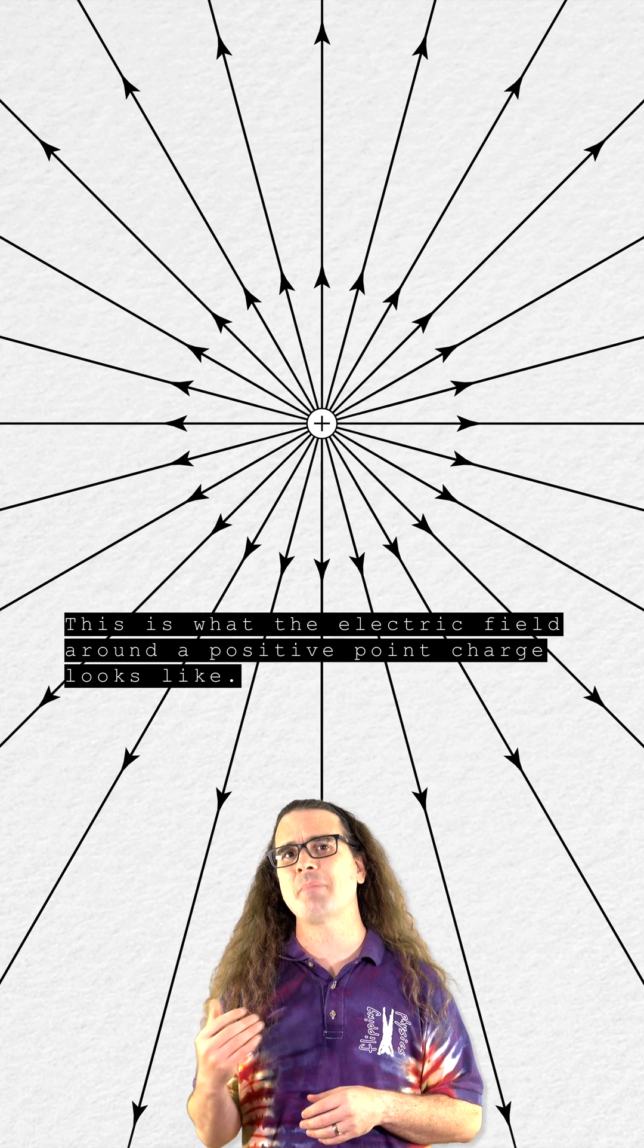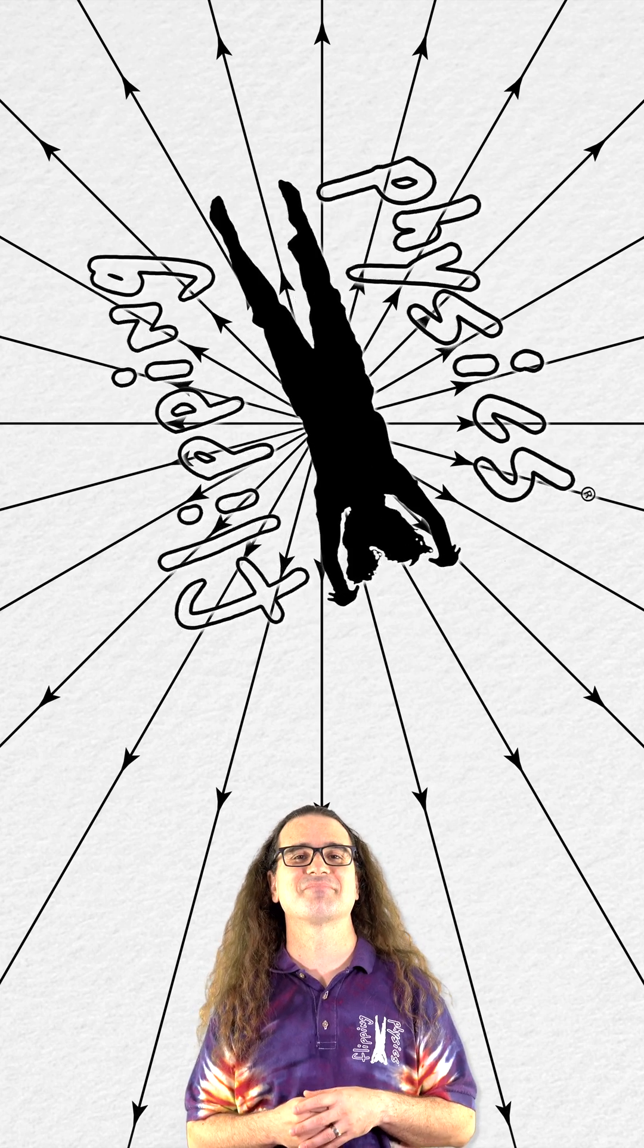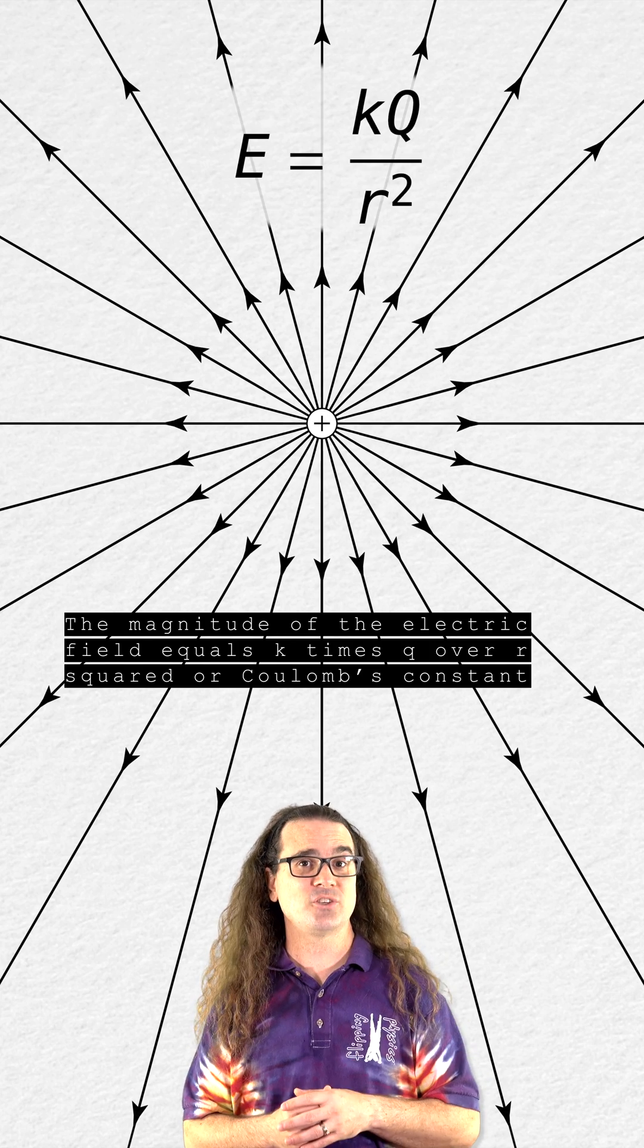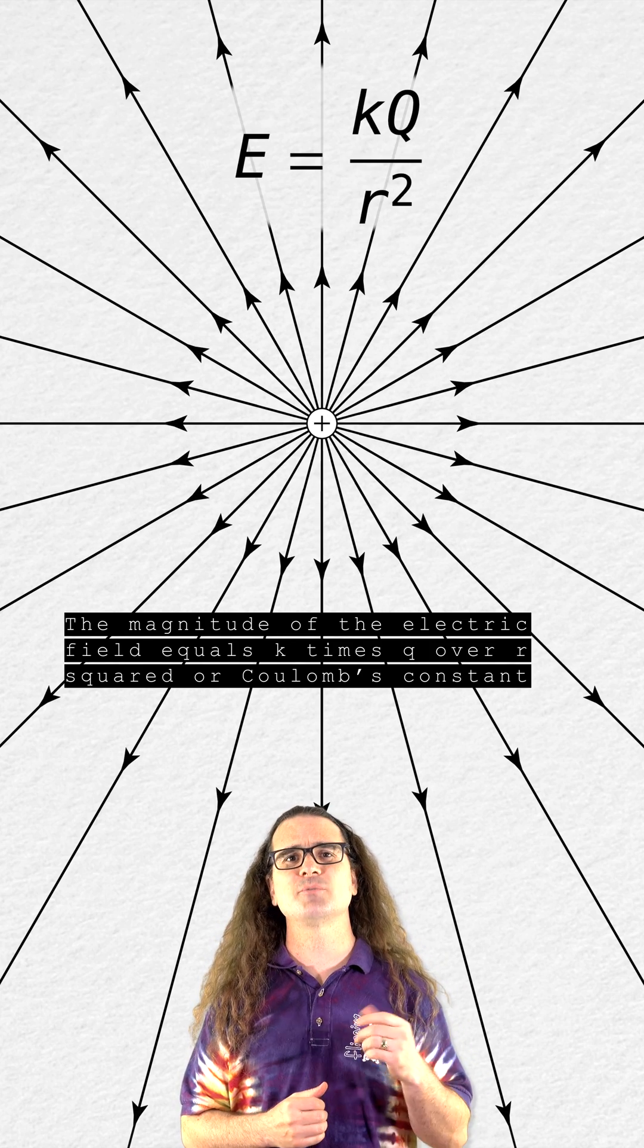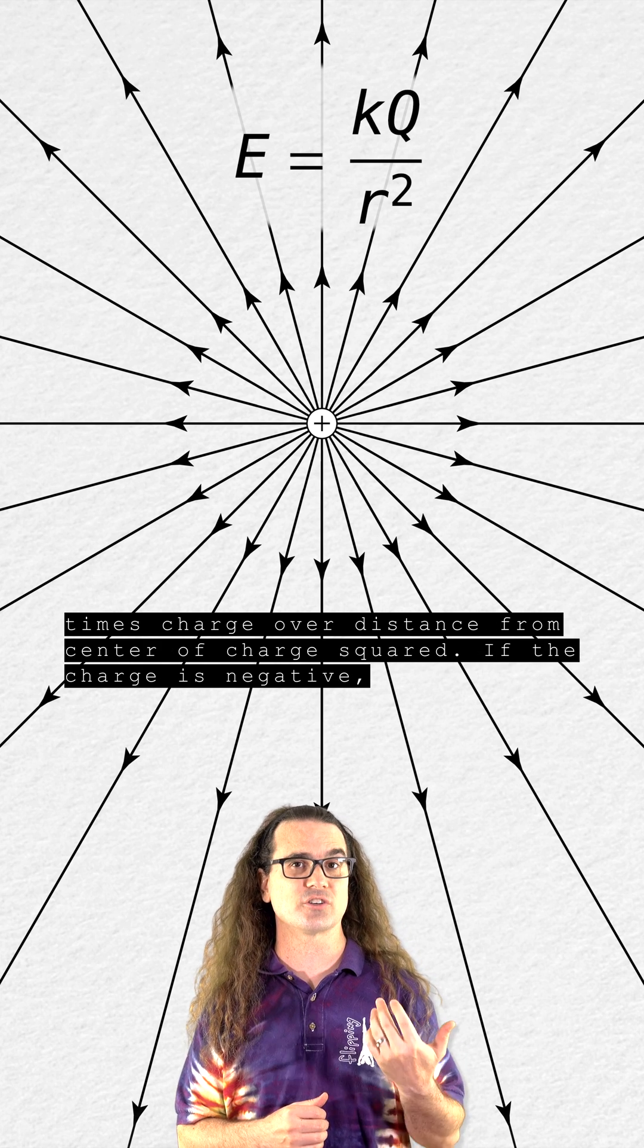This is what the electric field around a positive point charge looks like. The magnitude of the electric field equals k times q over r squared, or Coulomb's constant times charge over distance from center of charge squared.